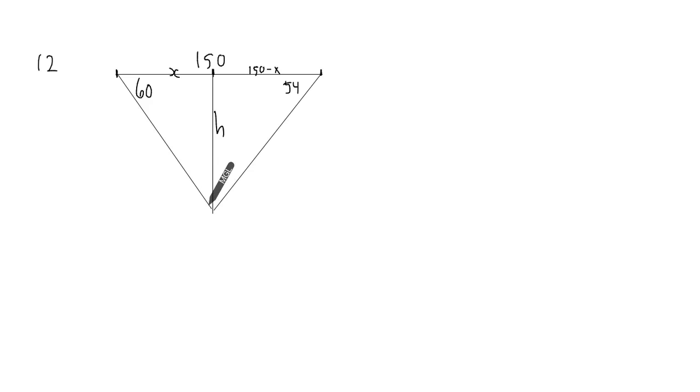Thus, looking at this right angle triangle over here, I see that tan of 60 will be equal to h over x. In other words, cross multiplying, x will equal h over tan 60.